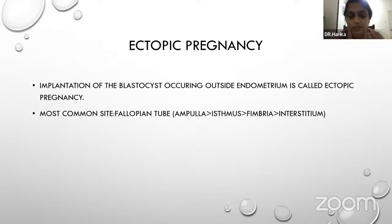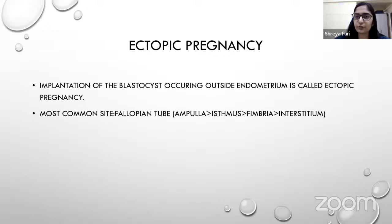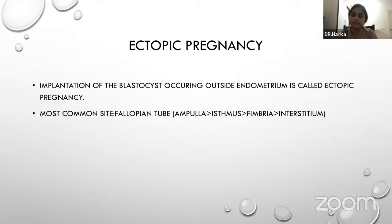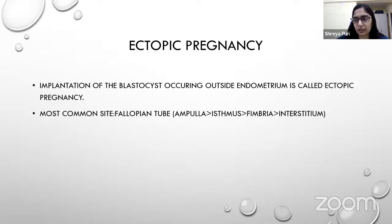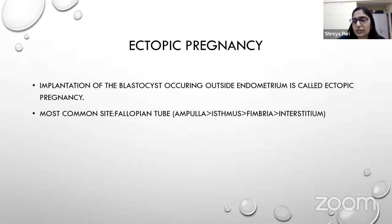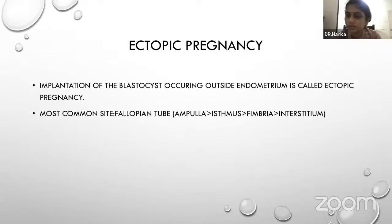Discussion: the most common site of fertilization in the fallopian tube is the ampulla, which is why it is also the most common site of tubal ectopic pregnancy. The three fates of tubal ectopic are: tubal abortion (more common when implantation is in the distal tube), tubal rupture (ectopic continues until rupture), and spontaneous resolution.